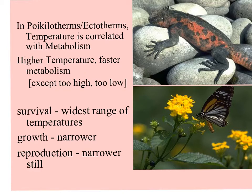Poikilotherms have their metabolism correlated with temperature — the higher the temperature, the faster their metabolism. In a hot desert, you can see lots of these little poikilotherms skittering around. If it's too high, they may cook; if it's too low, they may freeze. For poikilotherms, survival is seen across the widest range of temperatures.